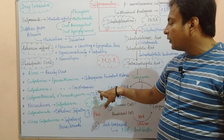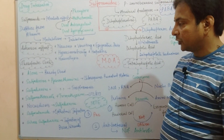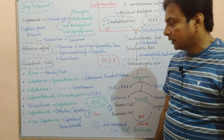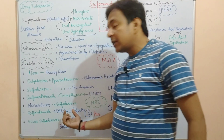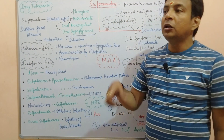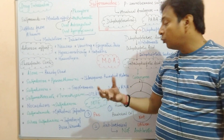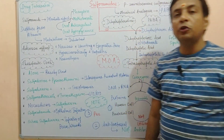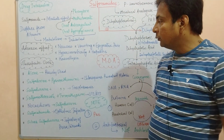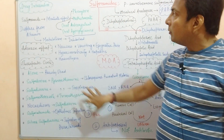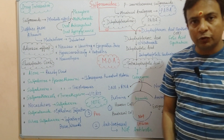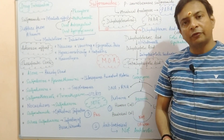Sulfonamides are used in urinary tract infections and respiratory tract infections. So this covers the mechanism of action, drug interaction, adverse effects and therapeutic uses of sulfonamides. This is all from my side for today. Thank you.